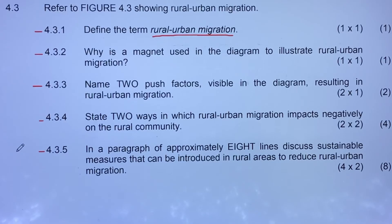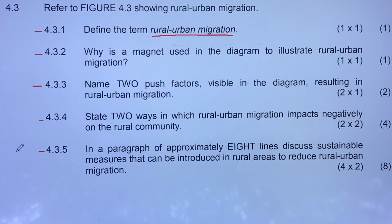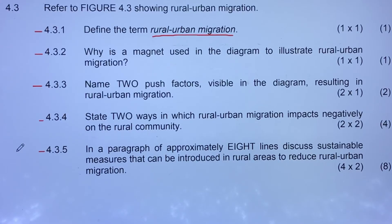The government must ensure that people's basic needs are met so they are not forced to move from rural areas. You must also provide quality services — quality education, quality healthcare, and other government services. Industrial development can be introduced to create more employment.